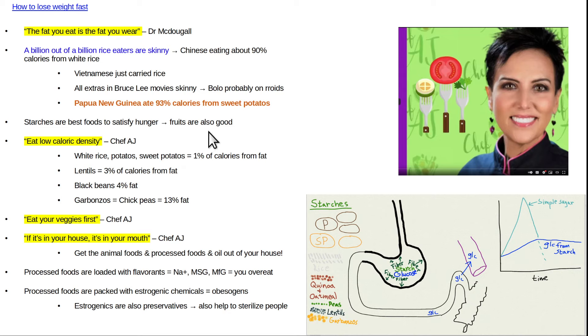Fruits is a whole big topic. I've made entire lectures on that. Eat low caloric density. Chef AJ has the best book on how to lose weight. Also at her YouTube channel, she's got lectures on what she recommends for losing weight. So that's very good information. Eat low caloric density. So the lower the percentage of calories from fat, the faster you're going to lose weight. White rice, potatoes, and sweet potatoes only have 1% of the calories from fat. Those are great weight loss foods. I made the note that the Vietnam soldiers, who were great soldiers in the Vietnam War in the 1960s, all they would carry around with themselves would be rice and water. And they had a lot of energy. They were bad asses.